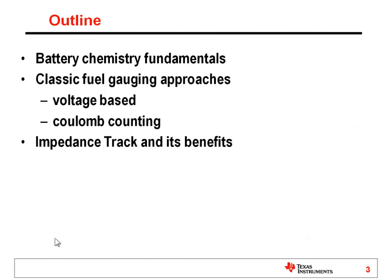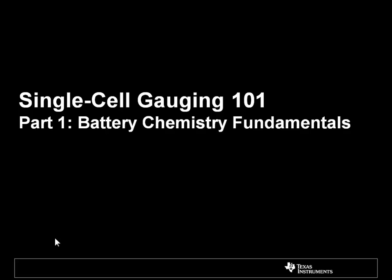As I mentioned, we're going to have three separate videos. This first video, we're going to talk about battery chemistry fundamentals. In the second one, we're going to look at some of the classic fuel gauging approaches — voltage based and Coulomb counting. And then in the third video, we'll talk about impedance track and its benefits and all the extra value that it can add to your system. Let's get started with part one: battery chemistry fundamentals.